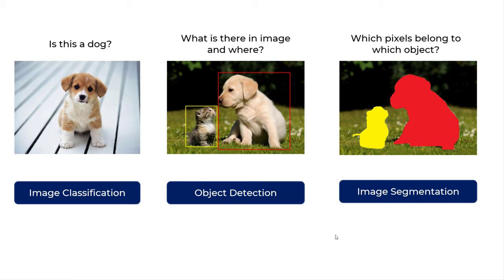Image segmentation is a little more involved — I just gave a very simple definition of it here. The image segmentation I showed you is called instance segmentation. There is also semantic segmentation, but for this video, just to keep things simple, you can leave it with this understanding.